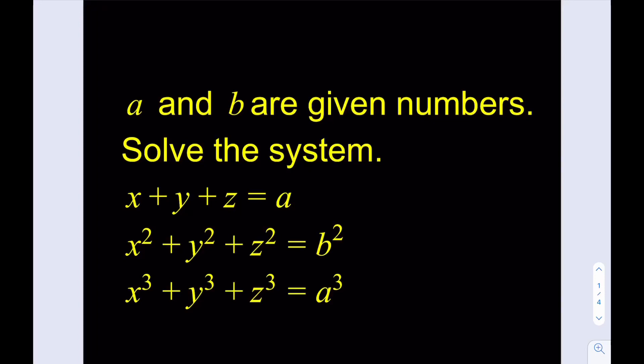Hello everyone. This is going to be number four in our challenging problem series. We have a system of equations, and as you can see here, A and B are parameters — they're given numbers and we're supposed to solve the system. A and B are not necessarily equal; if they are, we're going to take care of that at the end. In order to solve this problem, I'm going to go ahead and define some variables here.